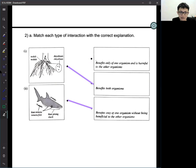And then this one is benefit only one organism. Benefit only one organism, correct or not? Because the remora fish will get the benefit of the protection and food, but the shark gets nothing.